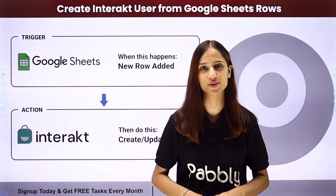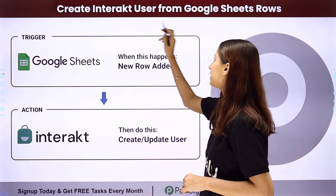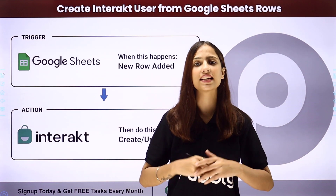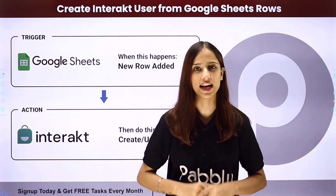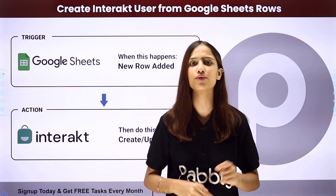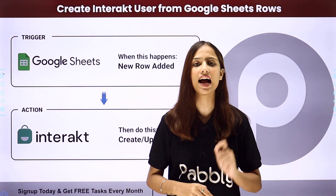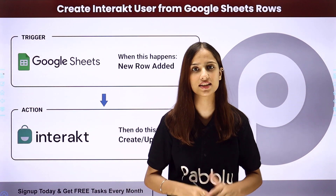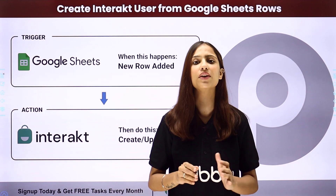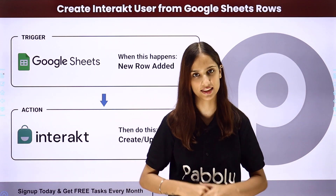Hello everyone, welcome back to Pabbly. In today's video we will understand how to create an Interact user from Google Sheets rows. Here, let's say I have the details of my clients or customers in my Google Sheets like name, email, and phone number. Whenever I add a new row in my Google Sheets regarding the details of my clients or customers, I want to create that client or customer as a user in Interact.